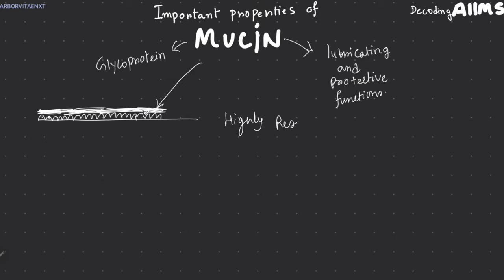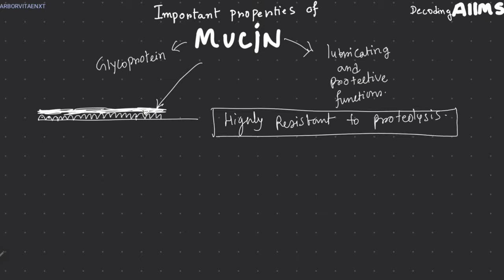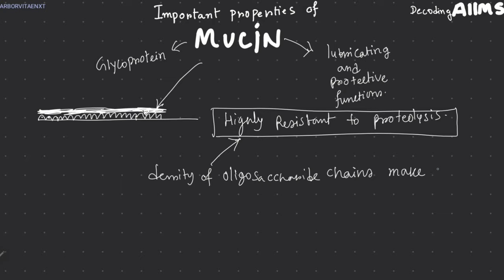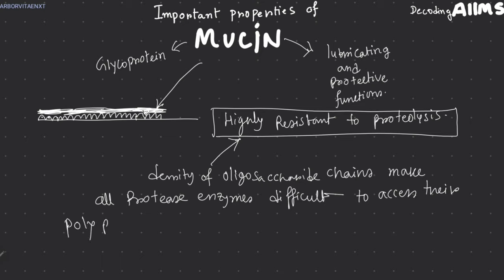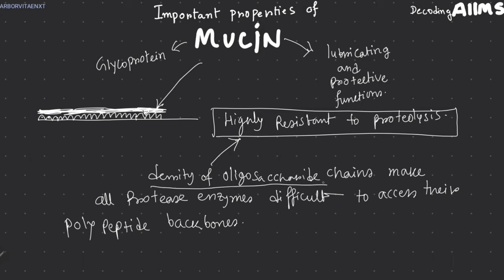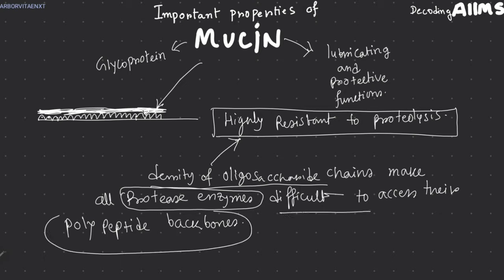One important point about mucin is that it is highly resistant to proteolysis, which is why it can serve as a good protective barrier. The reason is that the density of oligosaccharide chains makes it very difficult for protease enzymes to access the polypeptide backbones of mucin.